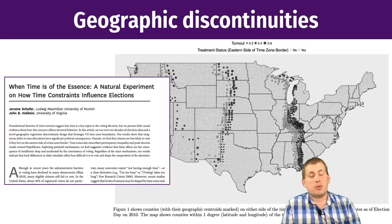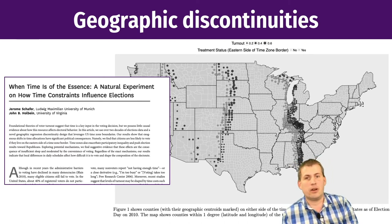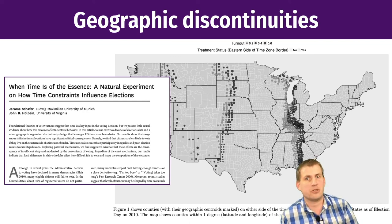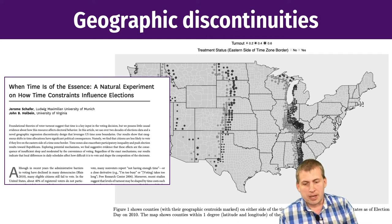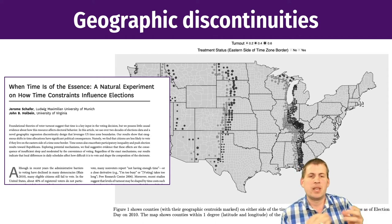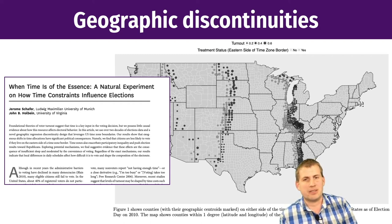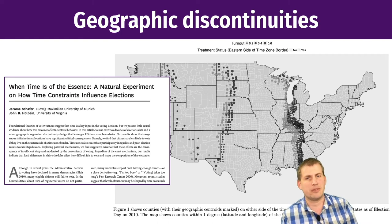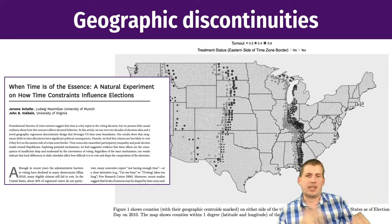Lots of people are doing this in real life with really interesting questions that you can't answer with randomized control trials. In one study, researchers were interested in whether having more time in the day makes it more likely for you to vote — something you can't run a randomized control trial for. You can't give some people 25 hours in a day and others only 24; you can't control the sun like that.